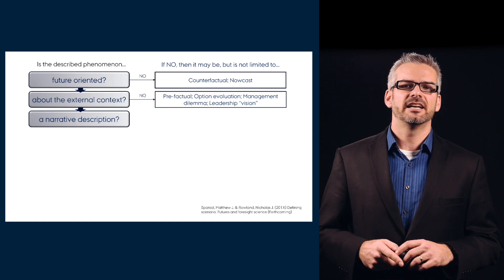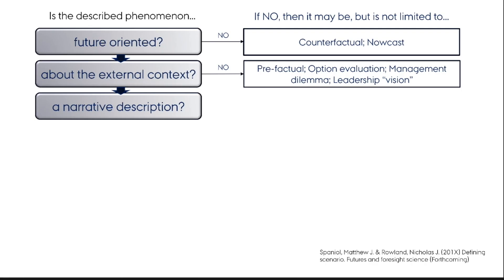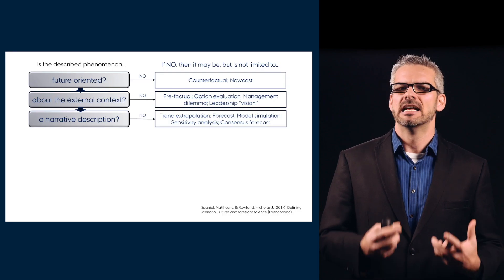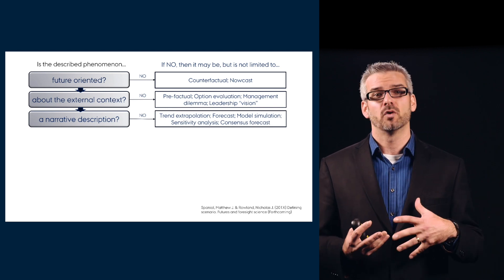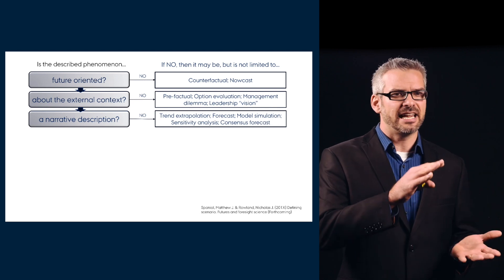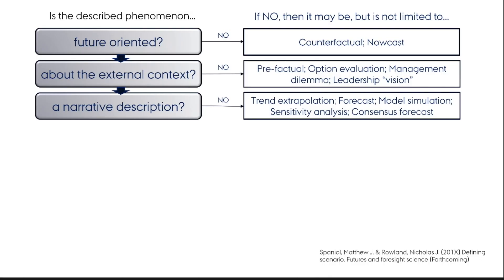The third question: is it a narrative description — a story? If it's not a story, we're talking about the extrapolation of data points into the future: what might oil prices be at the end of the year? A forecast, a simulation — the outputs of these tools are not necessarily stories. They might be inputs or parts of stories. A sensitivity analysis — price of oil at $100 a barrel plus or minus 50% — gives us a sensitivity analysis, but it's not really a story and not much we can plan from.